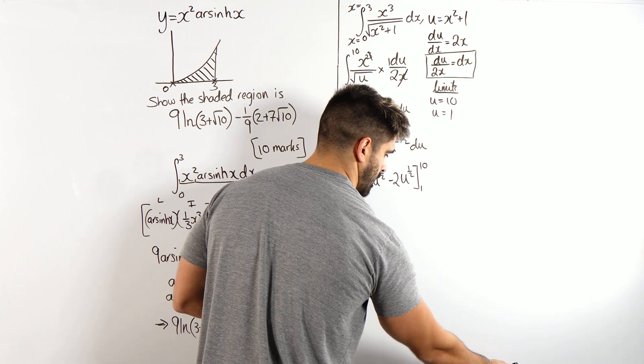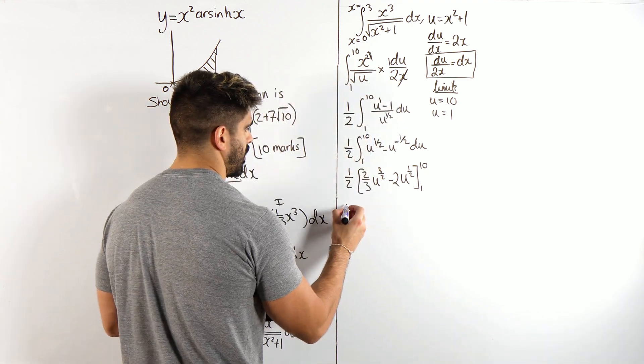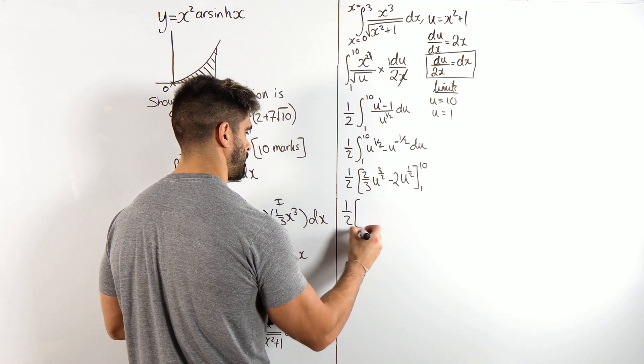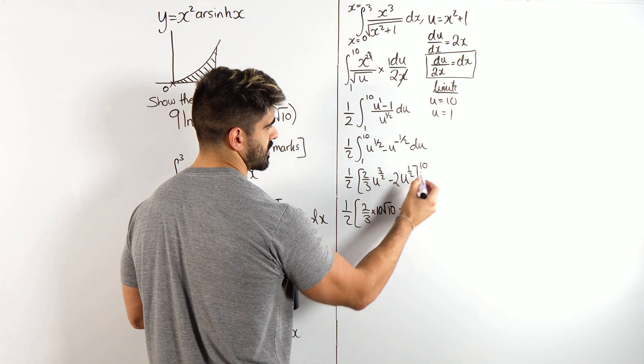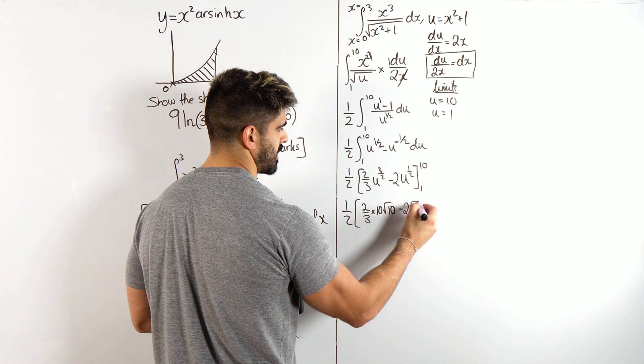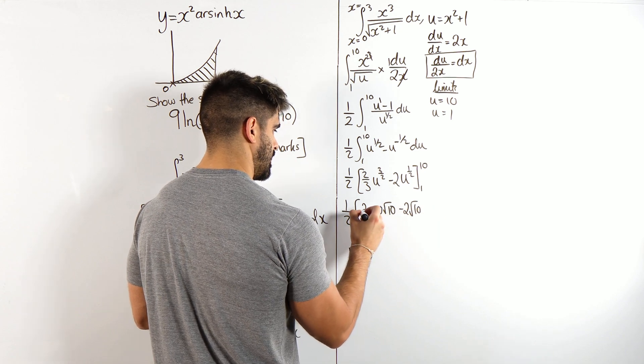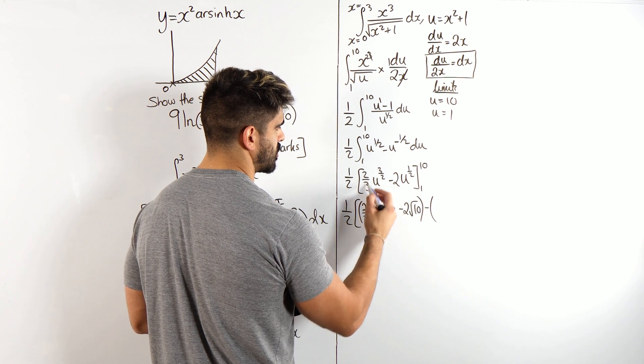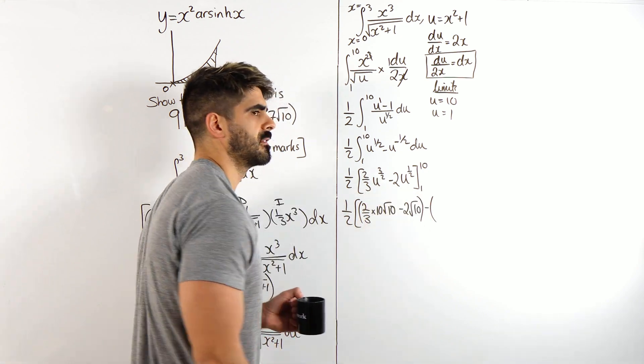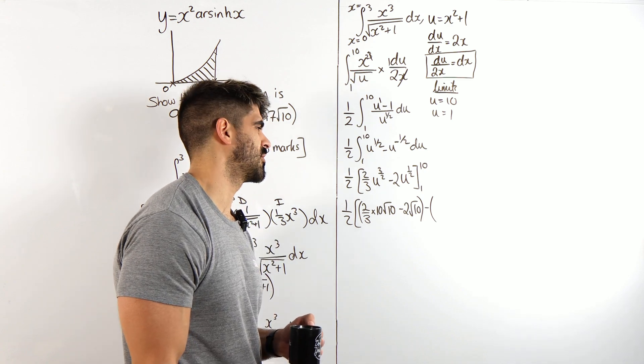So, cool, we have a half, 2 thirds times 10 root 10 minus, when you put 10 into this, easy, 2 root 10, minus, when you sub in 1 you just get 2 thirds minus 2, what's that, minus 4 thirds.